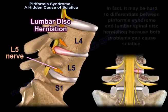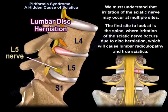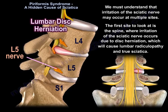We must understand that irritation of the sciatic nerve may occur at multiple sites. The first site to look at is the spine, where irritation of the sciatic nerve occurs due to disc herniation, which will cause lumbar radiculopathy and true sciatica.